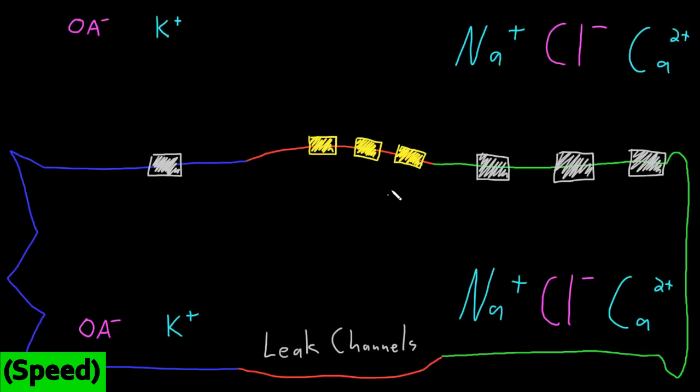Here I've drawn a kind of blown-up neuron. We'll have the soma in red, the axon in green, and one dendrite in blue. I've blown up the dendrite and the axon really large just so I have some space to draw. It's useful to consider the formation of the neuron resting potential in imaginary steps, but in reality they all occur simultaneously.